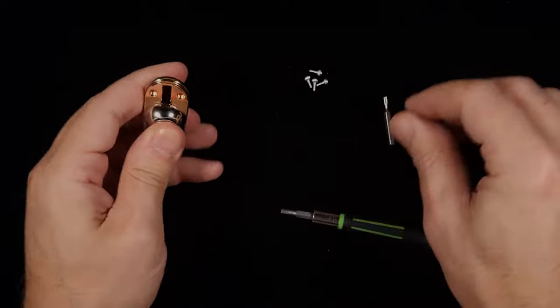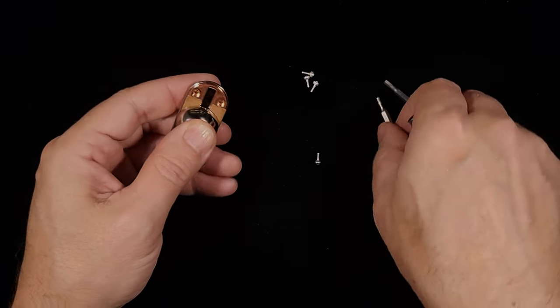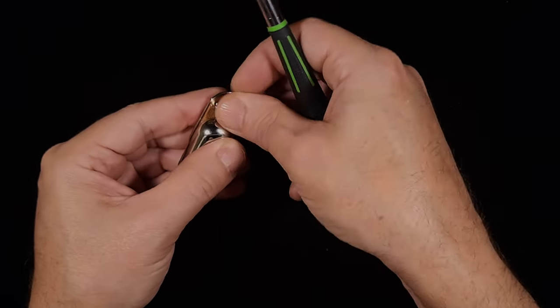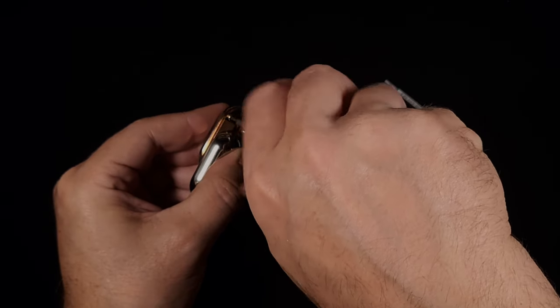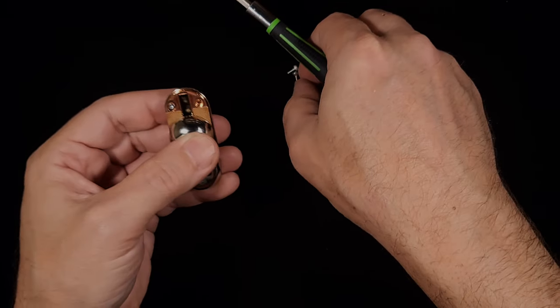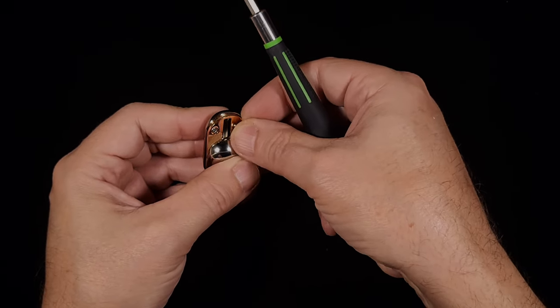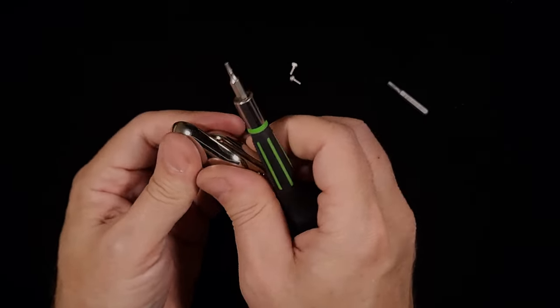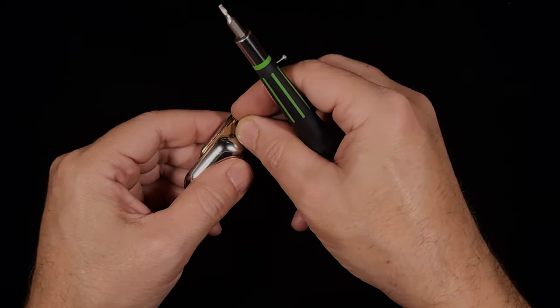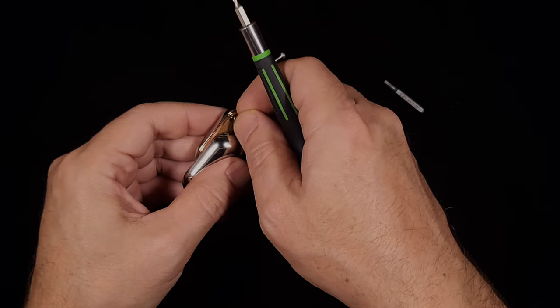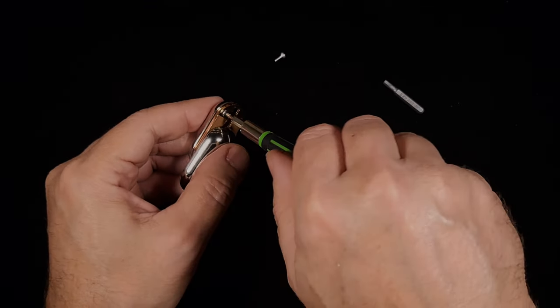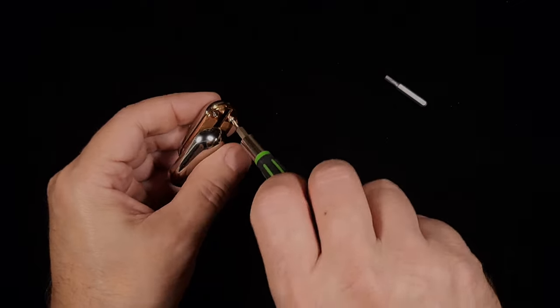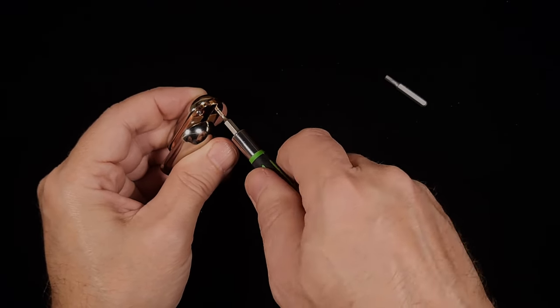Hold everything together. Slide it apart. Now we need to switch the bits back to the T6. Again, don't go cranking them down. This is die cast material. It's not meant to take a lot of torque. Make sure your threads are lined up nice. So there we go. We're down to the last screw.